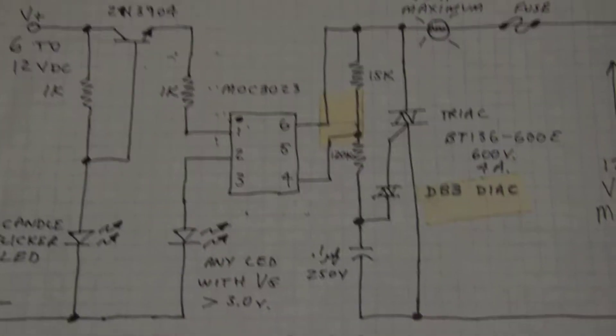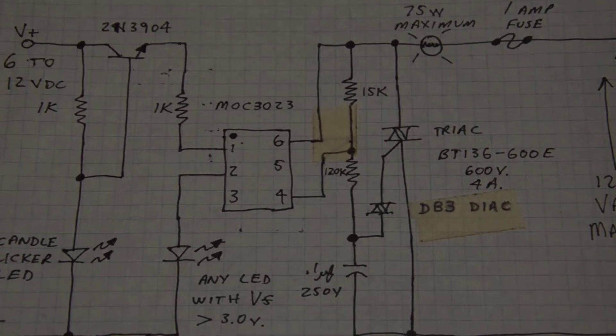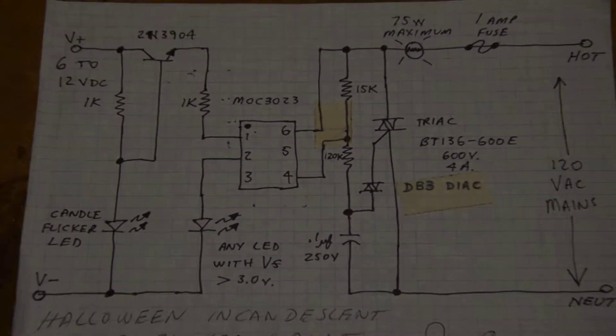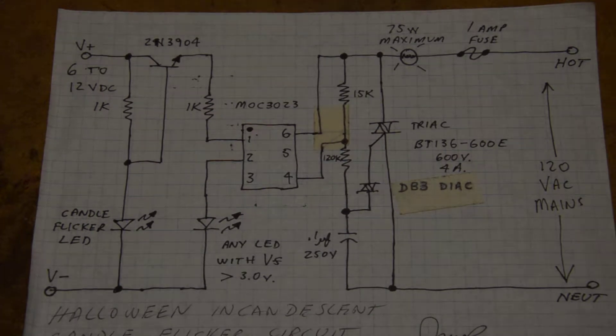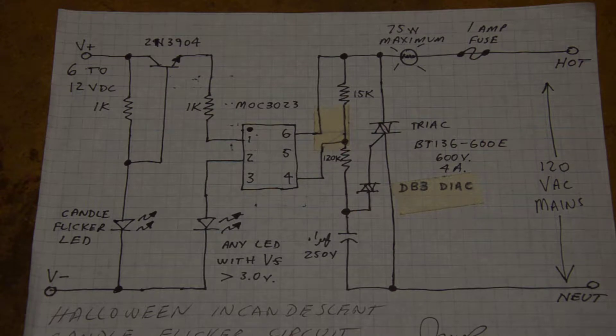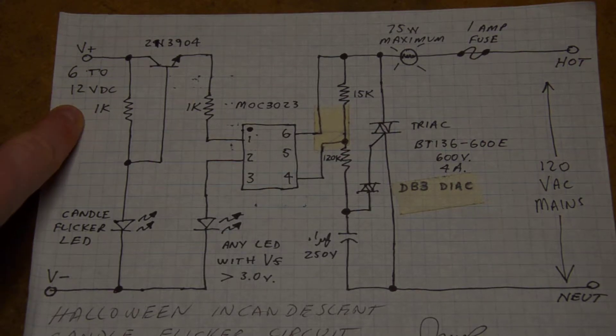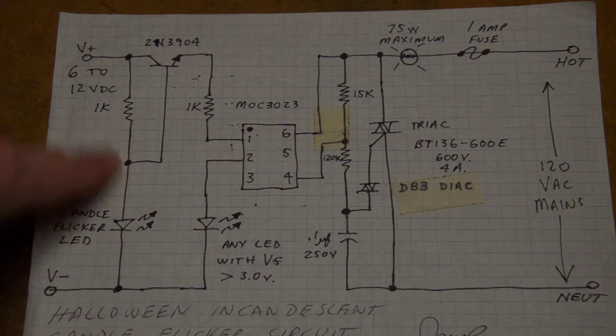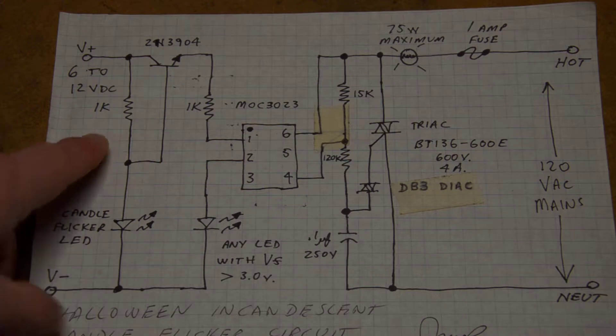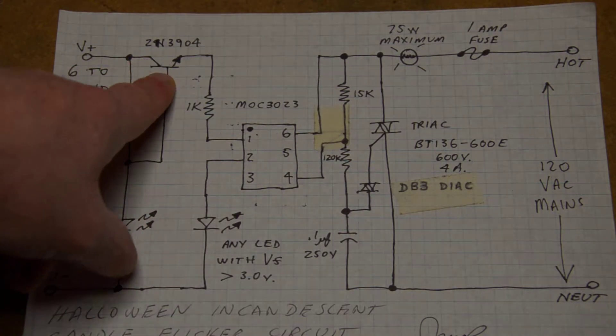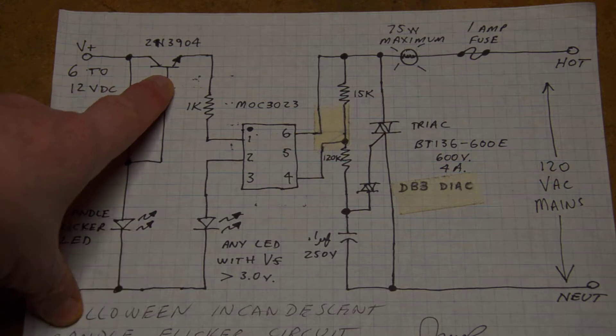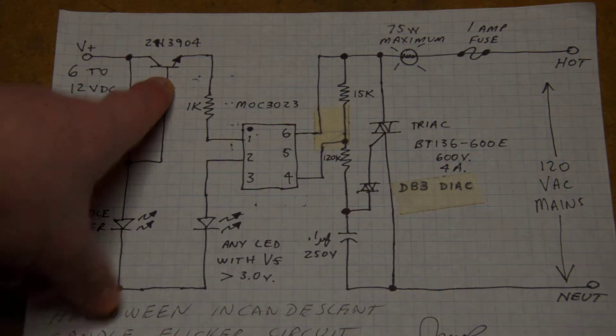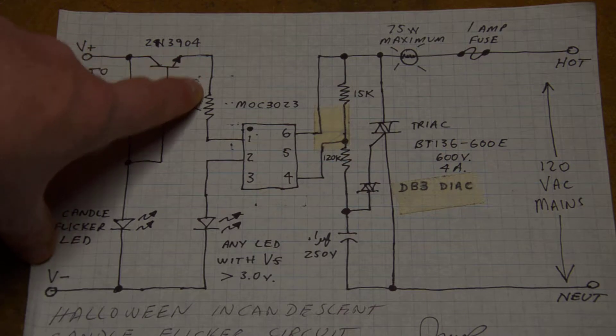Okay, this is the schematic. What we have here is it will run on six to twelve volts. We've got our candle flicker LED here with a 1K resistor acting like a voltage divider that is feeding into this 2N3904 transistor configured as an emitter follower, so it amplifies current not voltage.